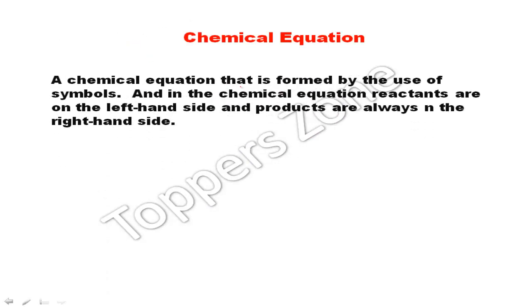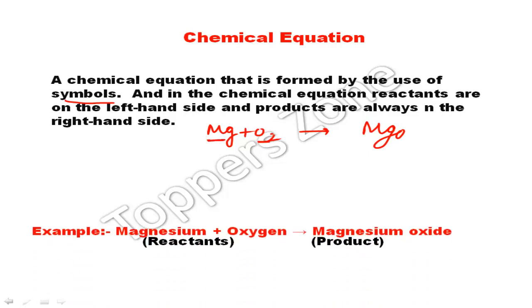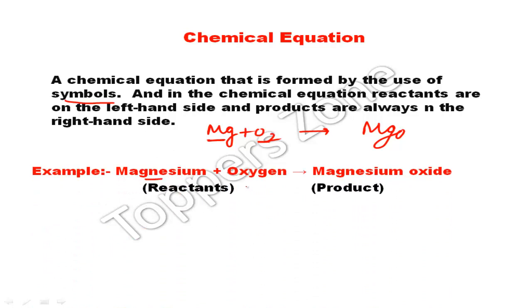Next, we have the chemical equation. A chemical equation is formed by the use of symbols and formulas. For example, Mg + O2 gives MgO. Here, Mg is the symbol for Magnesium, and O2 is the symbol for Oxygen. We write O2 because gases exist in the form of diatomic molecules. The product is MgO. The reactants are always on the left-hand side and the products are always on the right-hand side.